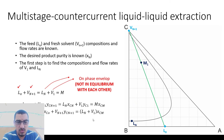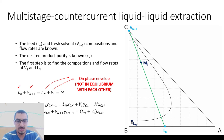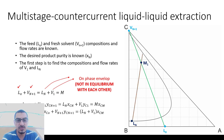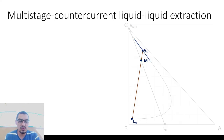First, for point LN, I know the XA composition, but I don't know XC. XC is simple to get because LN is coming out of a stage, and assuming all stages are ideal, LN will lie on the raffinate line. If I know XA, I can get XC by plugging it into the equation that fits the raffinate line — this is something we'll do numerically in Excel shortly. So now I know LN as (X, Y) and M as (X, Y), and I need to find point V1.